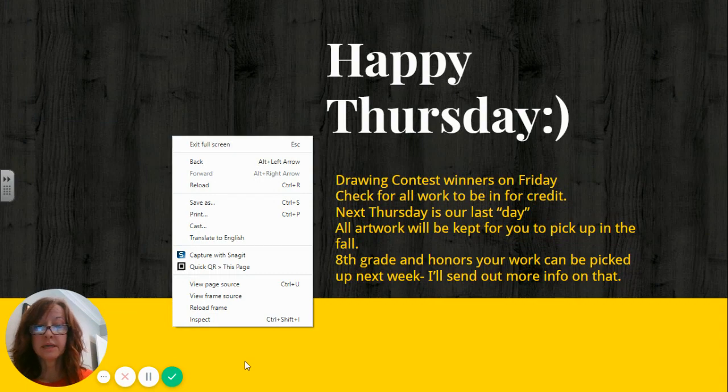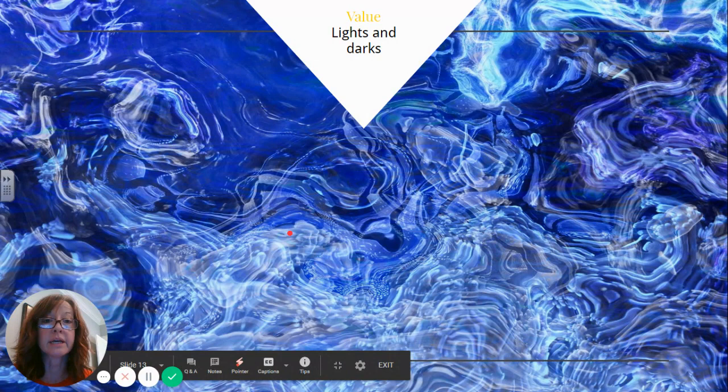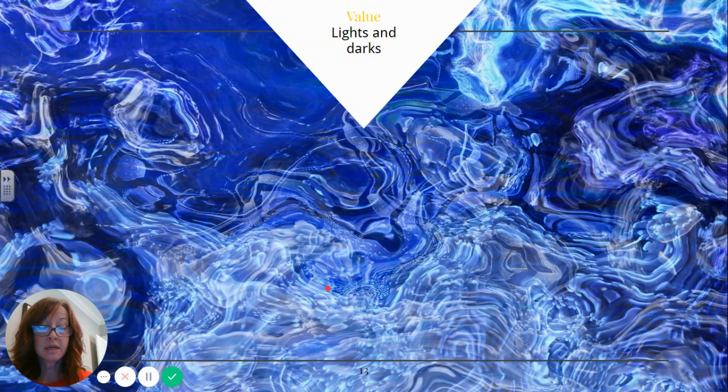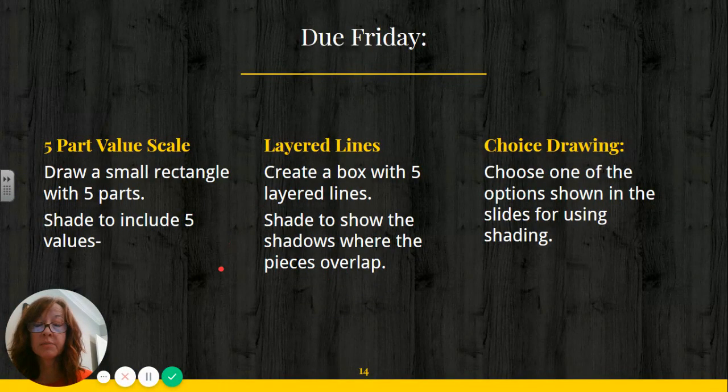Okay. All right. So value lights and darks help give the illusion of certain surfaces or images or depth. And if you are skilled at looking at it and adding it to your drawings, it can help improve them. So for today, I have a couple of things.